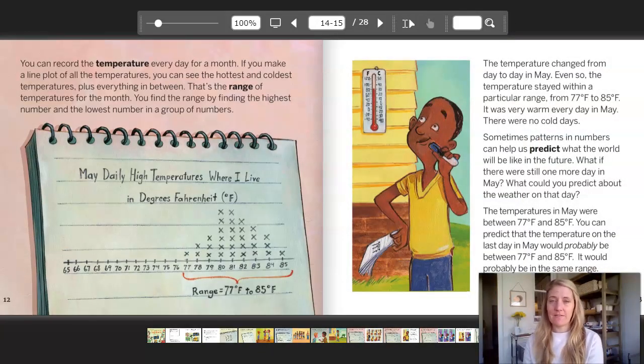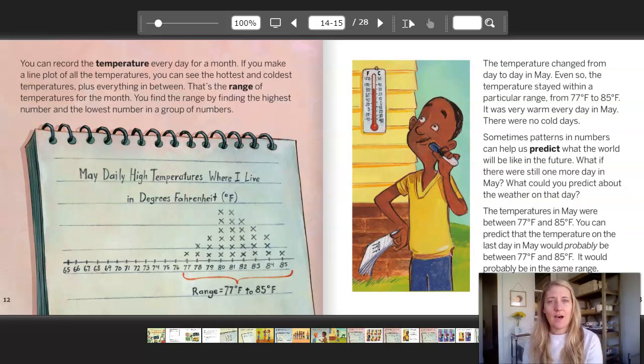You can record the temperature every day for a month. If you make a line plot of all the temperatures, you can see the hottest and coldest temperatures, plus everything in between. That's the range of temperatures for one month. You find the range by finding the highest number and the lowest number in a group of numbers. The May daily high temperatures where I live in degrees, and notice at the bottom it says the range now, 77 degrees Fahrenheit to 85 degrees Fahrenheit.